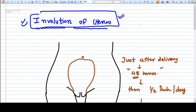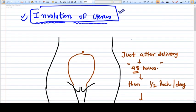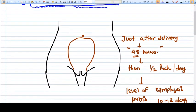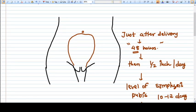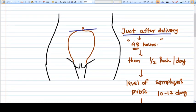Just after delivery, the uterus comes to the level of umbilicus, around the level of umbilicus. And when the placenta is also removed, it becomes just at the lower edge of umbilicus.